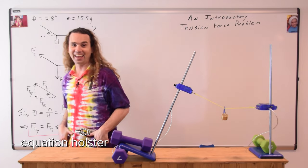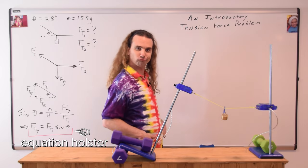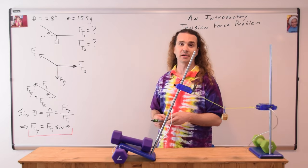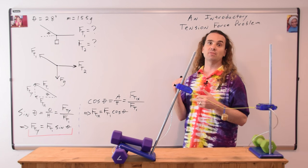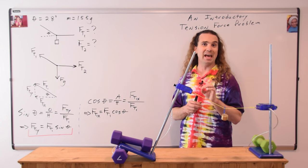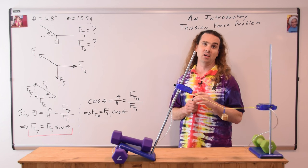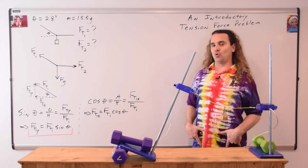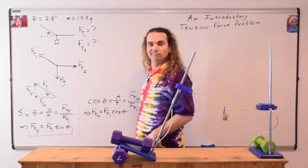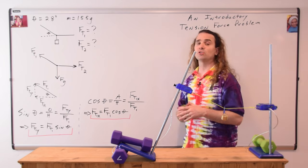Bobby put that equation in our equation holster — we save the equation for later when we need to use it. We could do the same thing with cosine theta. The cosine of theta equals adjacent over hypotenuse, or the force of tension one in the x direction divided by the force of tension one. Therefore, the force of tension one in the x direction equals the force of tension one times the cosine of theta. We are going to put this equation in our equation holster. We have completed step number two — we have broken forces into components.